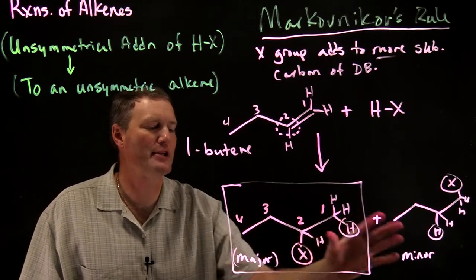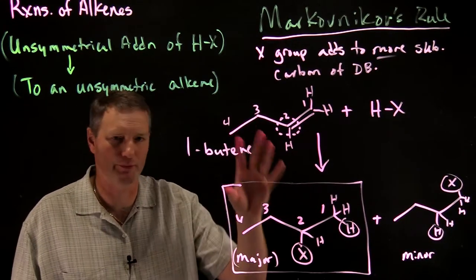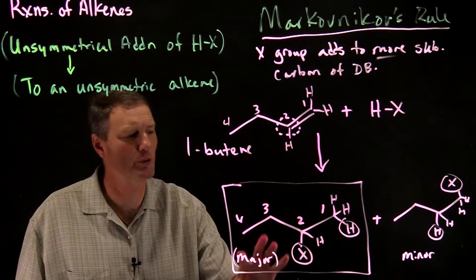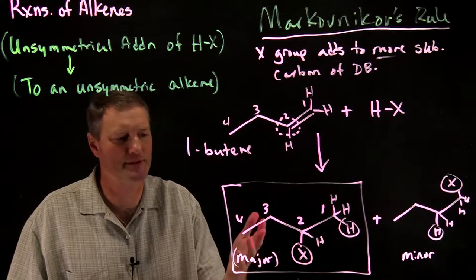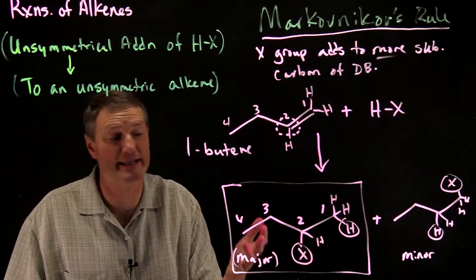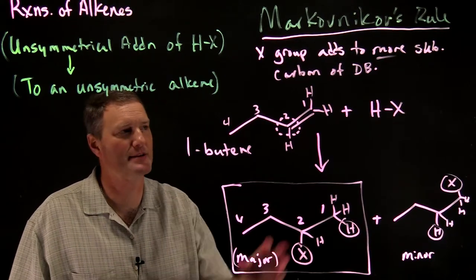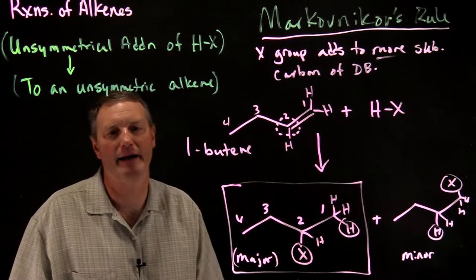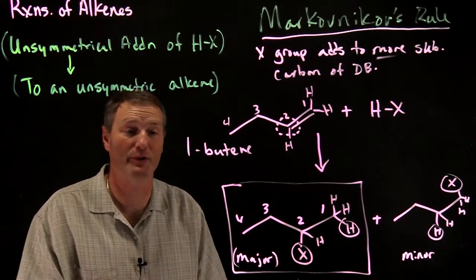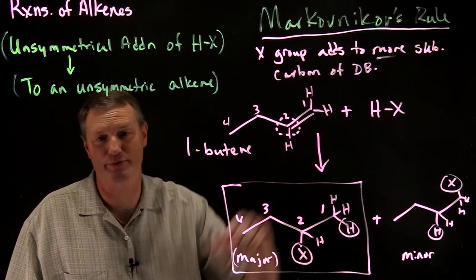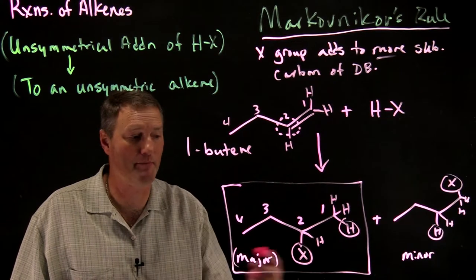Note that I've said major and minor — unless you actually performed the reaction in the lab you wouldn't know the exact percentages, but in general you might get something like 70% to 30%, sometimes as high as 95% to 5%, depending on the specific HX molecule and compound being reacted. Next we'll look at some examples using HX reagents and apply Markovnikov's rule to predict the major product.